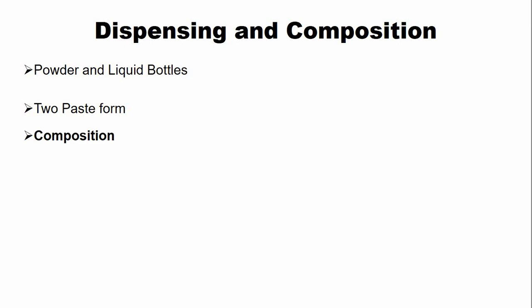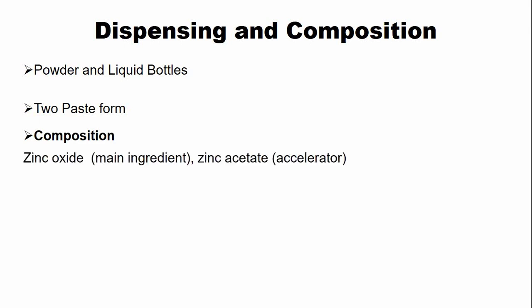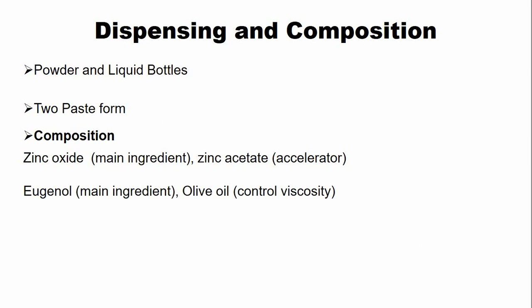In the case of powder and liquid bottles, the powder contains zinc oxide, which is the main ingredient, and zinc acetate, which acts as an accelerator. The liquid contains eugenol as the main ingredient, and olive oil is also added to control the viscosity of the liquid.